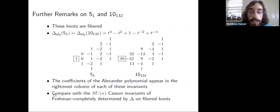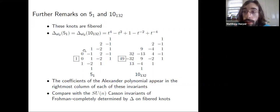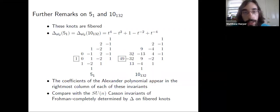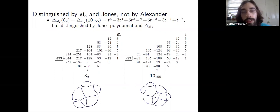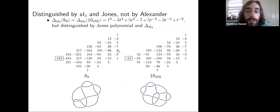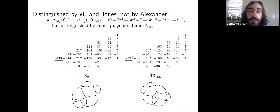Another remark about the fibered case: Frohman's SU(N) Casson invariants are completely determined by the Alexander polynomial on fibered knots, suggesting the SL3 invariant is not one of those relations. One last example: the 8, 9, and 10_{155} knots. Again in this monic case, the coefficients of the Alexander polynomial appear in the rightmost column. These are distinguished by SL3. The Jones polynomial does distinguish these, but the Alexander polynomial does not.